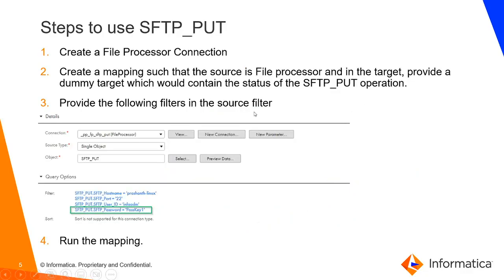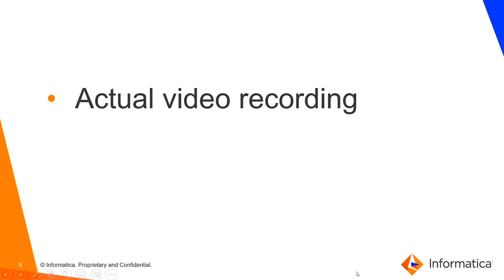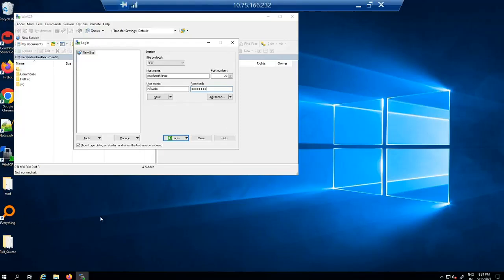The mapping is going to be fairly simple. The first step is to create the file processor connection. The second step is to create a mapping where the source is a file processor connector, and in the target we select a dummy target — either a flat file or a database connection — which will contain the status of the SFTP put operation. In the source we also provide further details in the query options: the host name, port number, username, and password of our SFTP user. Then we run the mapping.